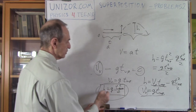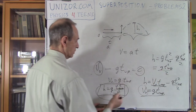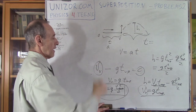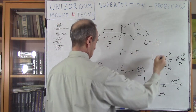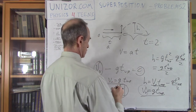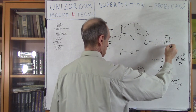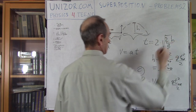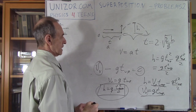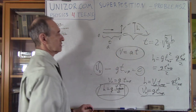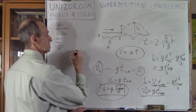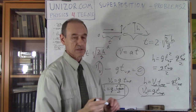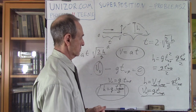From h we can find the total time: t_up + t_down = 2·√(2h/g). The horizontal speed is V = a_0·t. So the length of the long jump is V × total_time = 2·a_0·t·√(2h/g).